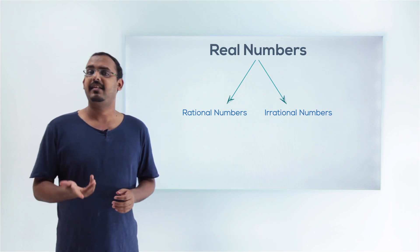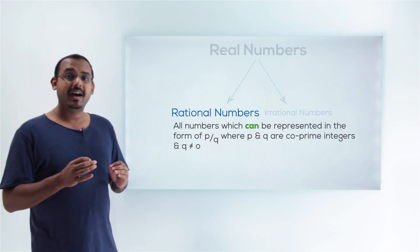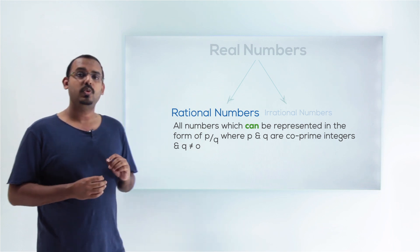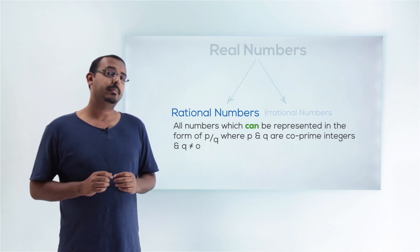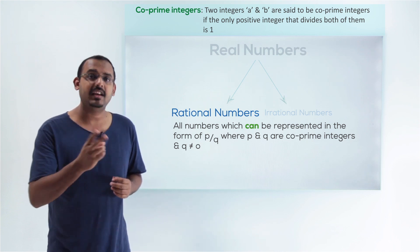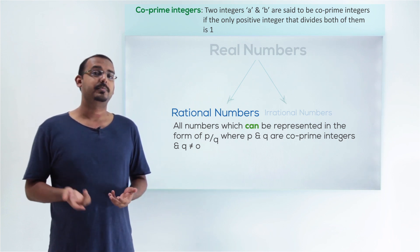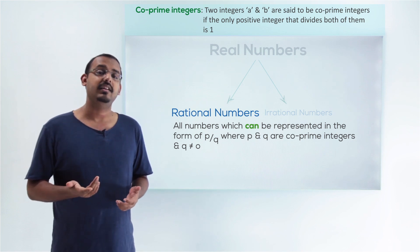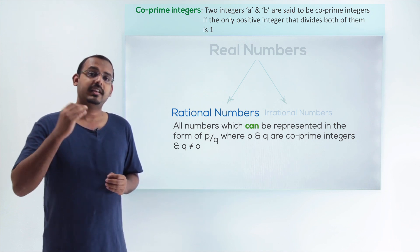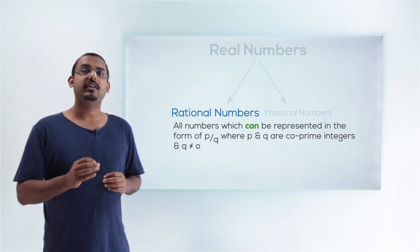There are two more categories of numbers: rational numbers and irrational numbers. Rational numbers are all the numbers which can be represented as P by Q — that is, as a division of two numbers — where P and Q are both co-prime integers. Co-prime integers are two numbers which do not have any common factor other than 1. For example, 10 and 13 are co-prime numbers. So a rational number can be expressed as P by Q, where P and Q are co-prime integers and Q is not equal to 0.